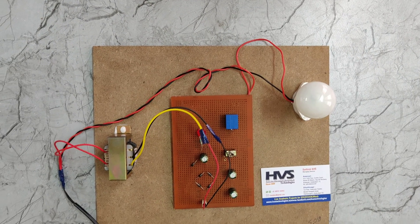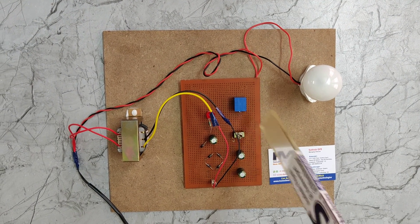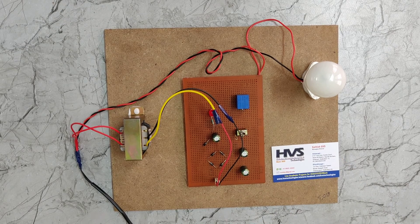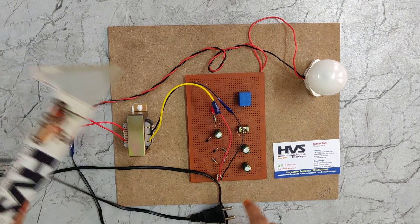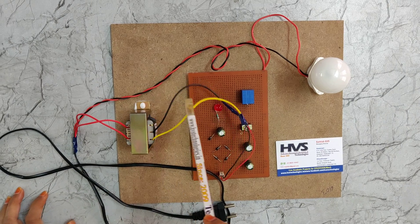Welcome to the project: Power Supply with Auto Switching Indication. Here we are using a step-down transformer which converts 230 volts AC to 12 volts AC.